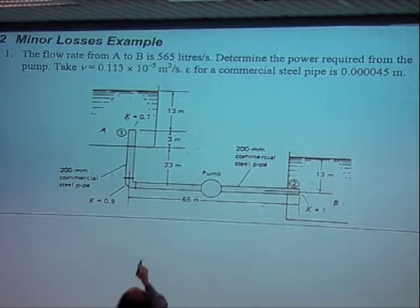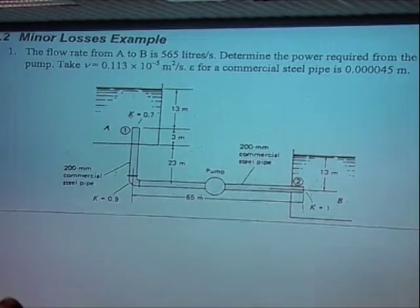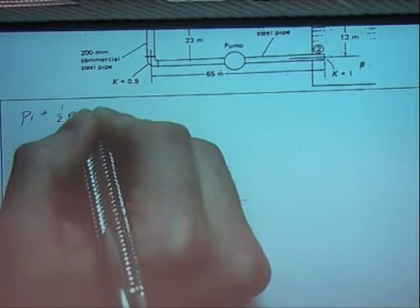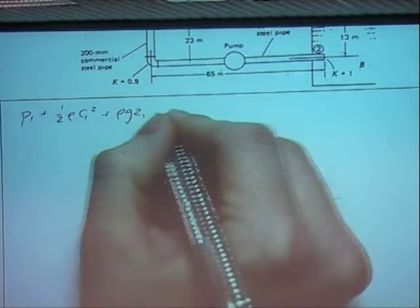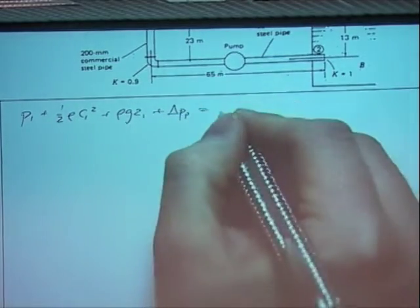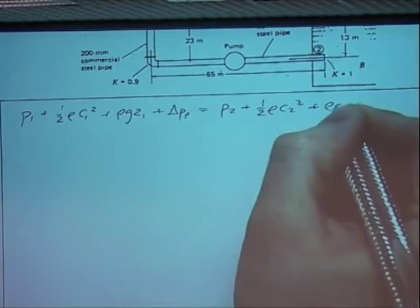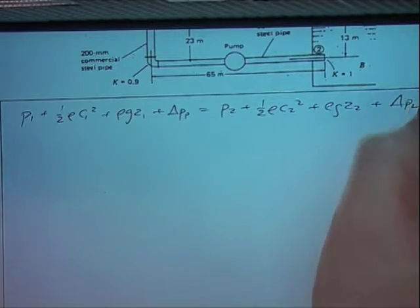Can I do that? No, I can't do that. The power required, and that is the pressure drop times by the flow rate. So we've got to work out the pressure drop, so the first thing to do, like all these problems, let's write Bernoulli's equation. I've got my delta PP term in here, because there's a pump, P2 plus one-half rho C2 squared plus rho gz2 plus delta PL.